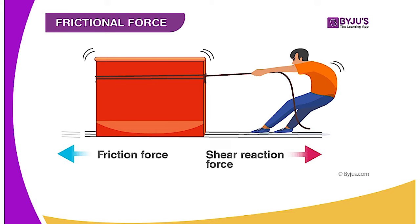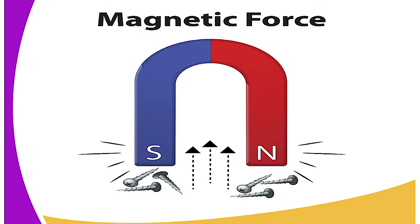We have the magnetic force. This is a force that exists in magnets. A magnet has a south pole and a north pole. When you take iron nails and put them in front of a magnet, the magnet will attract the iron nails. This shows us that there is a force that magnets have, and this is called the magnetic force.